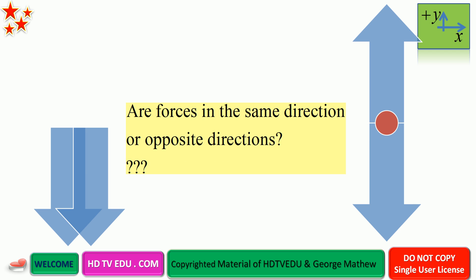We are given two forces: the normal force and the gravitational force. The gravitational force is always going to act vertically down. The normal force is from the surface — without the surface, you would be in free fall. So the surface prevents you from going through free fall, and the normal force has to act vertically up.